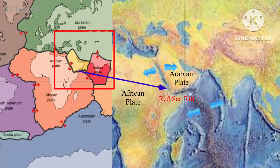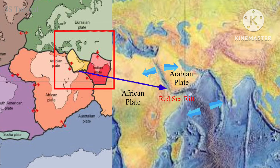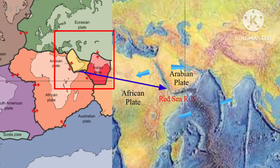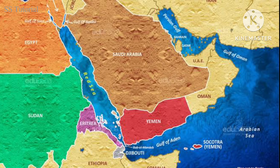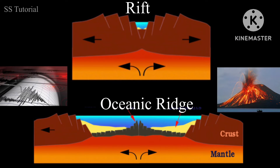But if the rift valley grows deeper and drops below sea level, it can be occupied by sea. As an example, we can mention the Red Sea Rift, which was formed due to the divergence of the African plate and the Arabian plate. This Red Sea Rift is occupied by ocean and is now well known as the Red Sea. In both cases, volcanic activities and earthquakes are common.